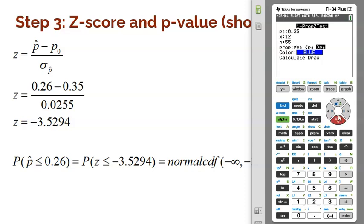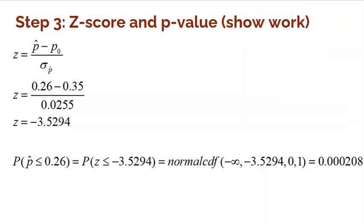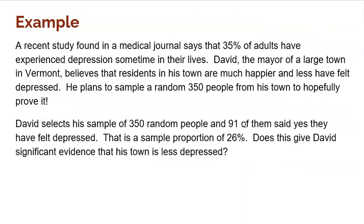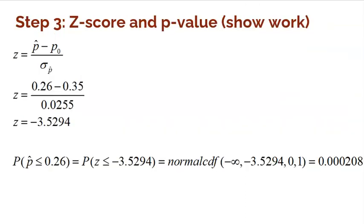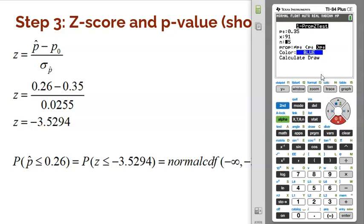Now, X is the number of successes in your sample. Now, we actually saw that there were 91 people in his sample out of his sample size. And sometimes you forget these things. So don't forget to go back and read the problem to know what the sample size was. And that was where we saw that 350.